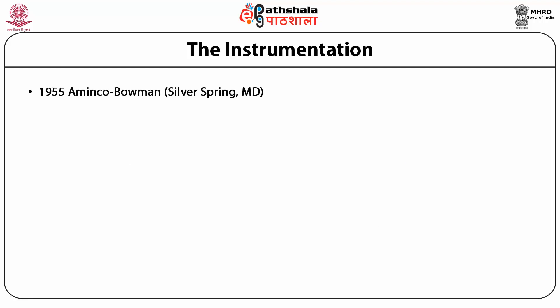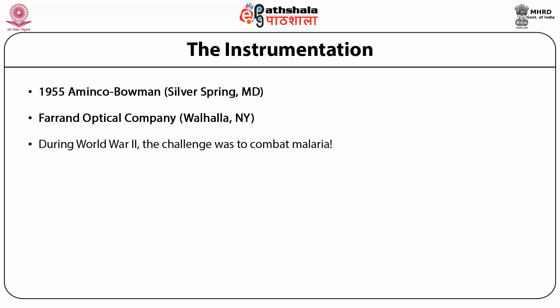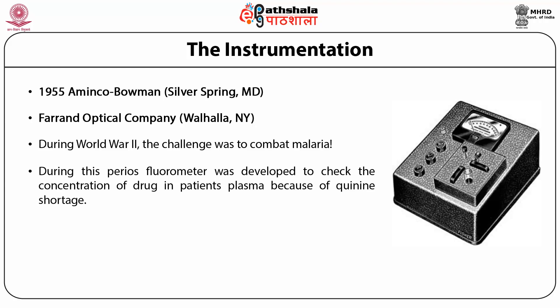In 1955, two companies — Aminco-Bowman and Farrand Optical Company — developed the fluorimeter for the first time. During World War II, the challenge was to combat malaria, and there was very limited availability of quinine, the only effective drug. Doctors used comparatively toxic alternative drugs and had to monitor the drug amount in blood. They developed a chemical method which showed fluorescence and could be recorded using a fluorimeter, enabling the concentration of the drug to be determined in the patient's plasma.